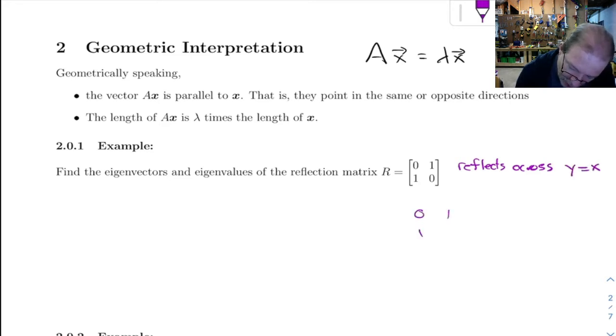If you look at this: 0, 1, 1, 0. If you multiply that by X, Y, you get Y, X. So it just swaps X and Y.